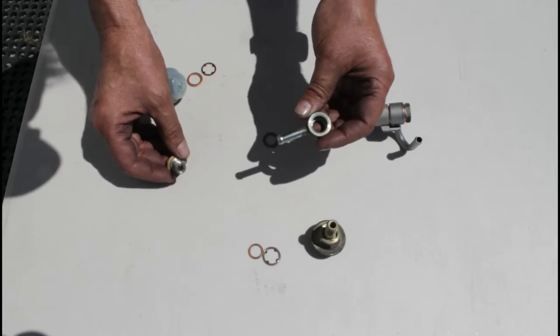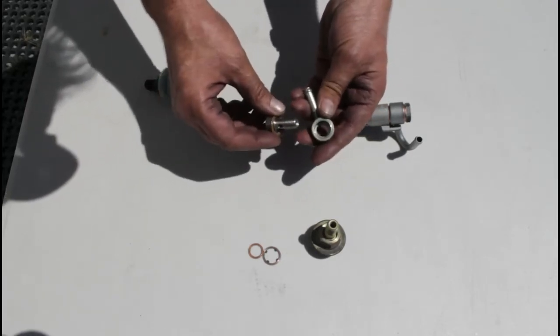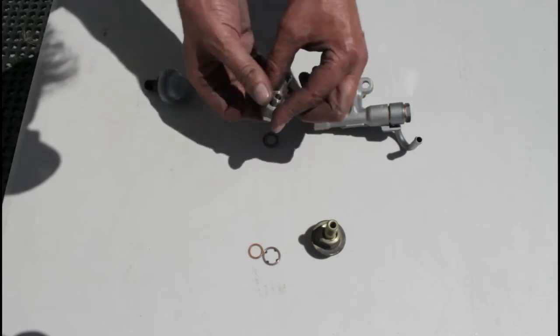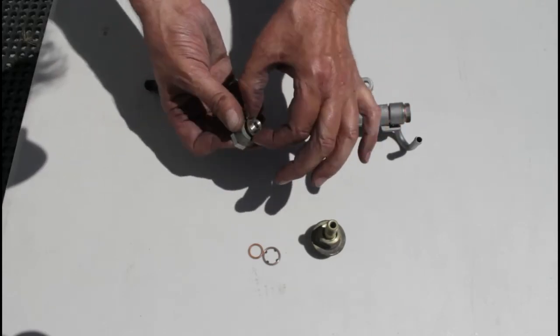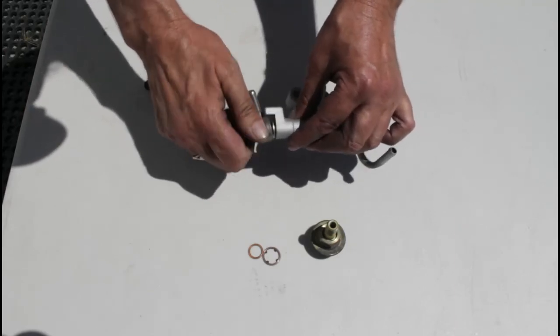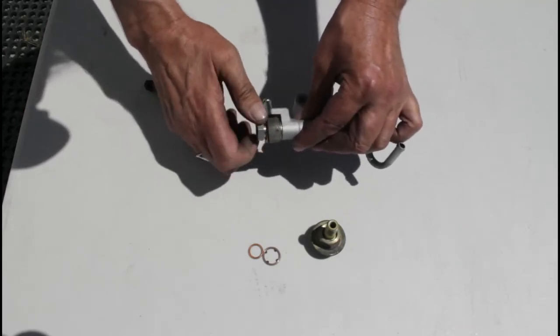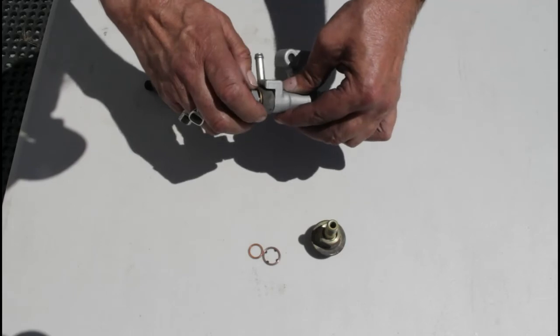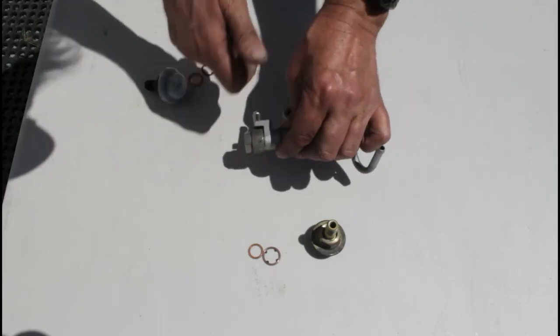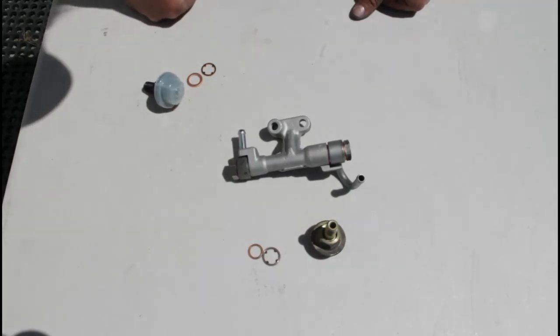Take your fuel inlet banjo. There's a large side and a small side. The large side gets the large washer, small side gets the small washer. Put it in the slot and make sure your washer stays in that spot. Pretty much it.